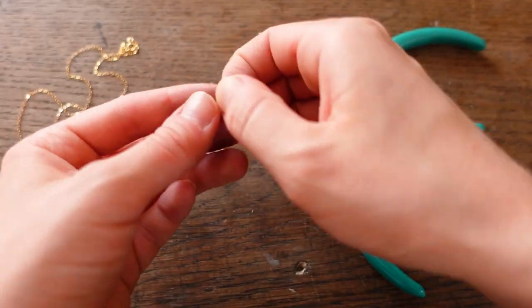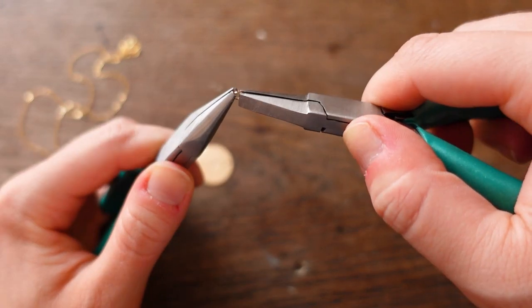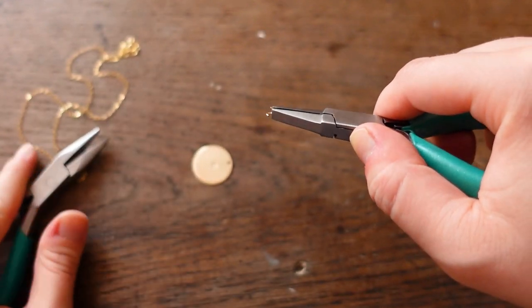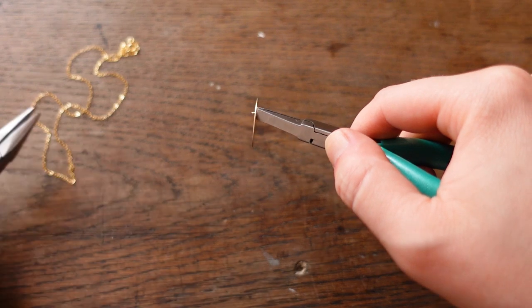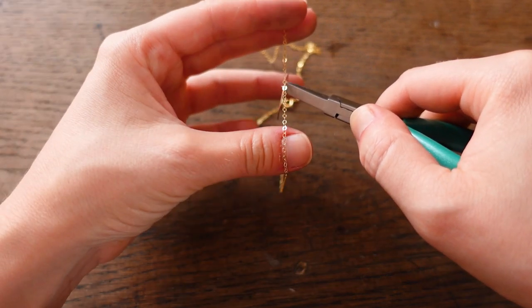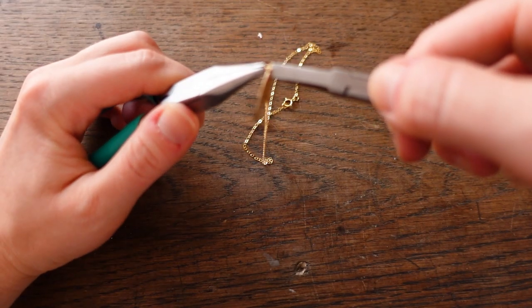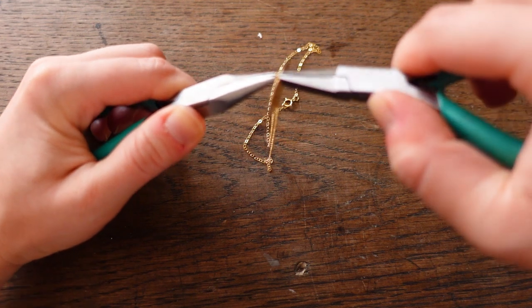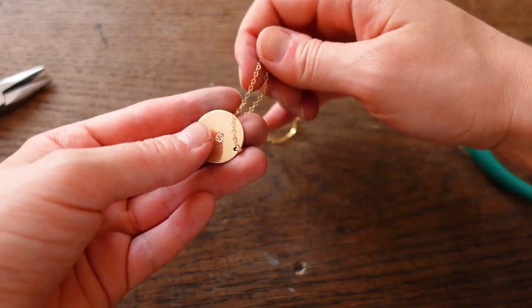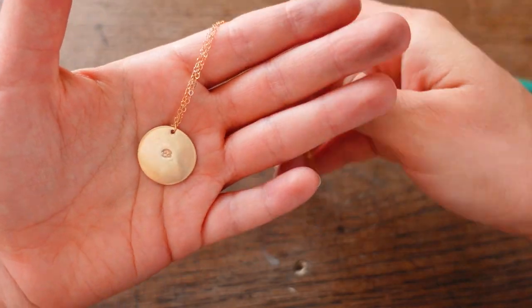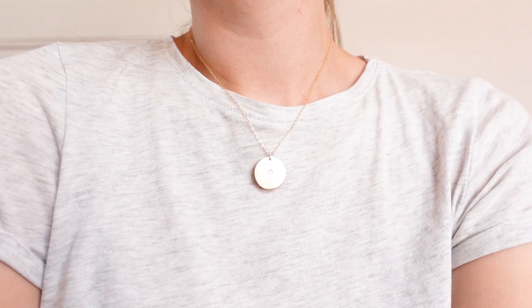All we have to do now is to put the jump ring through the disc using pliers and attach it onto the chain. And that's it! Your gold-filled disc necklace is ready and it's perfect for layering with other necklaces.